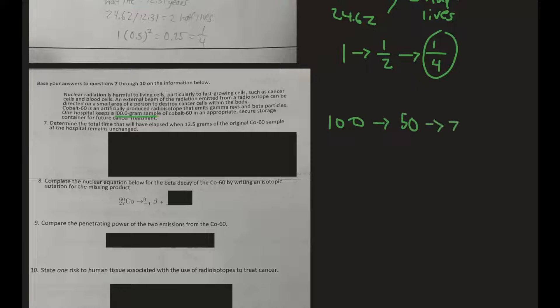100 decays to 50 — that's one half-life. Then it decays to 25 — that's two half-lives. And that finally decays to 12.5. So how many half-lives is that? That's three half-lives.